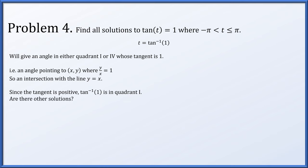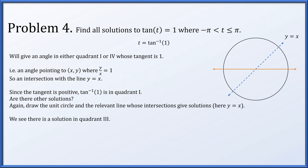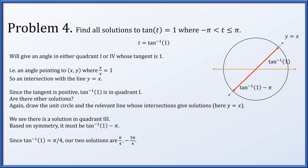Drawing the unit circle with the line y equals x shows intersections in quadrant 1 and quadrant 3. Arc tan(1) gives the quadrant 1 solution. The quadrant 3 solution is obtained by subtracting pi (since adding pi would exceed the allowed range). So the quadrant 3 solution is arc tan(1) minus pi. Since arc tan(1) equals pi over 4, our two solutions are pi over 4 and minus 3 pi over 4.